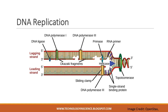DNA polymerase is able to add nucleotides only in the 5' to 3' direction. It requires a 3' hydroxyl group to which it can add the next nucleotide by forming a phosphodiester bond between the 3' hydroxyl end and the 5' phosphate of the next nucleotide. This means it cannot add nucleotides if a free 3' OH group is not available. The problem of adding the first nucleotide is solved with the help of a primer that provides the 3' OH end.